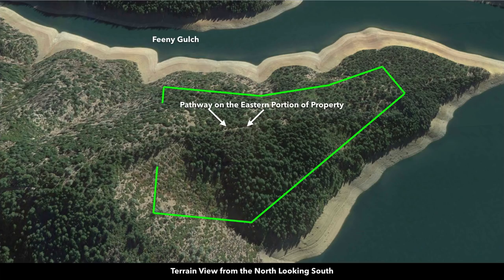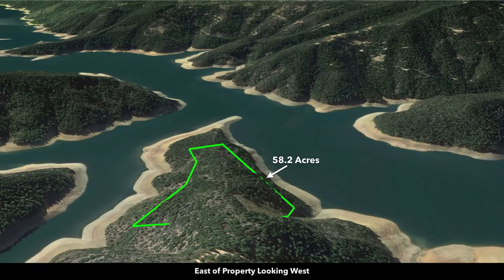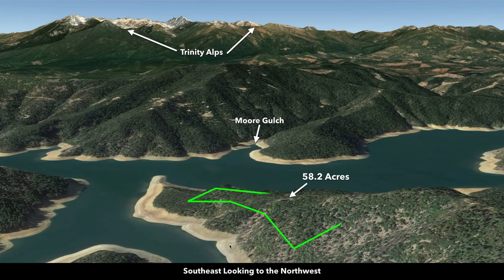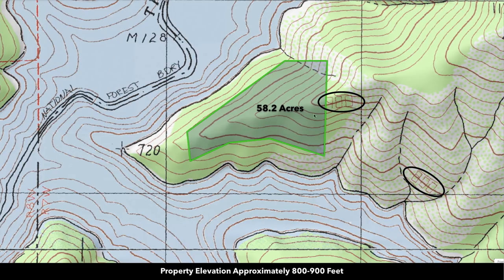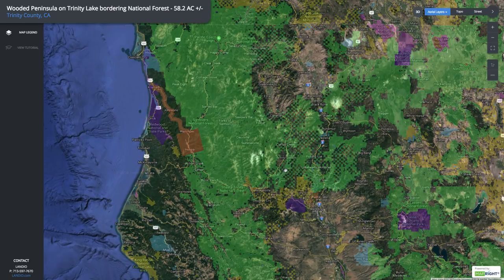Here's another top-down satellite view showing the north portion of the property with fall colors and the trail. Now we're east of the property looking west at the furthest west point of the peninsula. Here you can see the Trinity Alps. The topographic map shows that the elevation at the high point on the east boundary is about 900 feet, with a line at 800 feet, and the lower area at about 720 feet. The main elevation on the property ranges between 800 and 900 feet. Zoomed out on the interactive map, this 58.2-acre peninsula is literally surrounded by millions of acres of public land, mostly national forest, with the Pacific Ocean to the west.